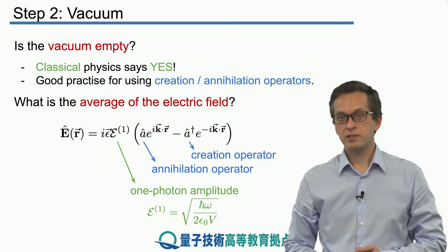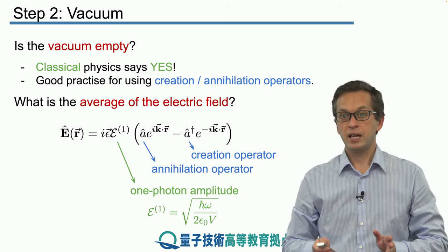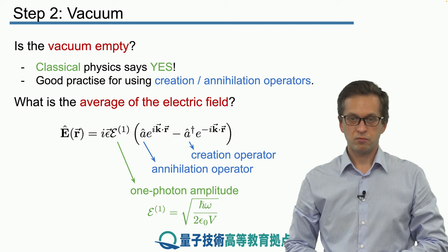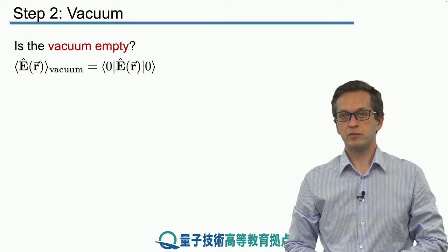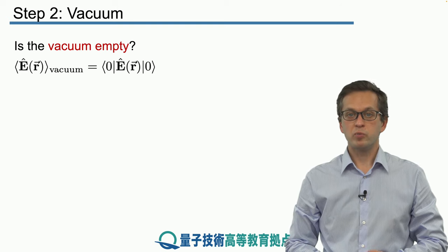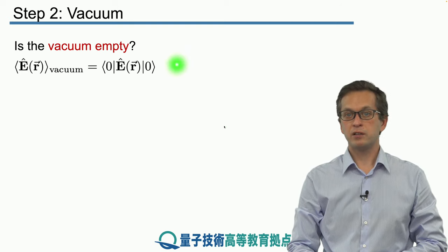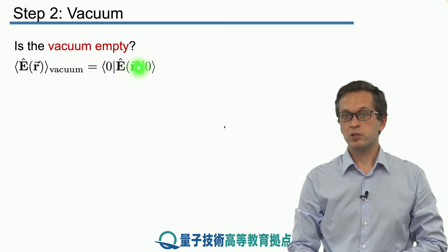And what we are interested in: what is the field when the state is in vacuum? This is a bit of a strange question, but we will see quantum mechanically it makes a lot of sense. So we compute the average. We know how to write the state of vacuum - it's just ket zero.